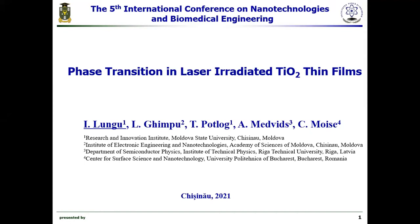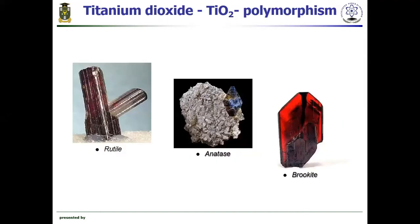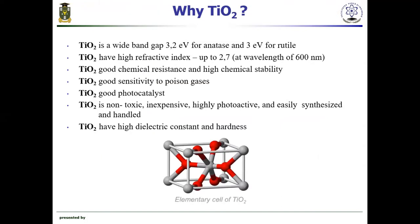Titanium dioxide is an inorganic compound that occurs in nature as the minerals rutile, anatase, and brookite. It was chosen because it has a wide band gap — 3.2 electron volts for anatase and 3.0 electron volts for rutile — a high refractive index up to 2.7, good chemical resistance and high chemical stability, good sensitivity to certain gases, good photocatalysis, is non-toxic, and has a high dielectric constant.